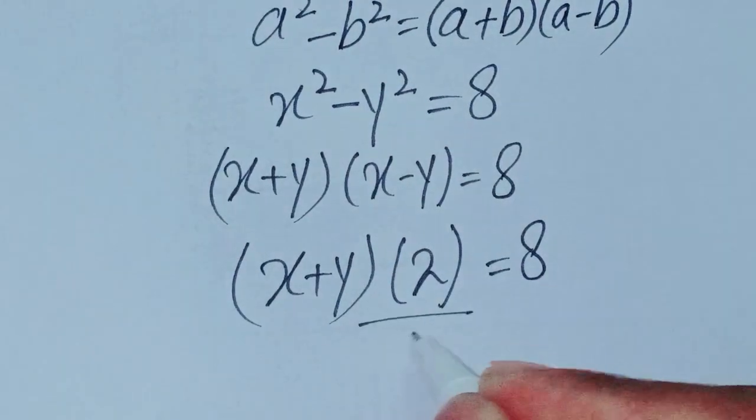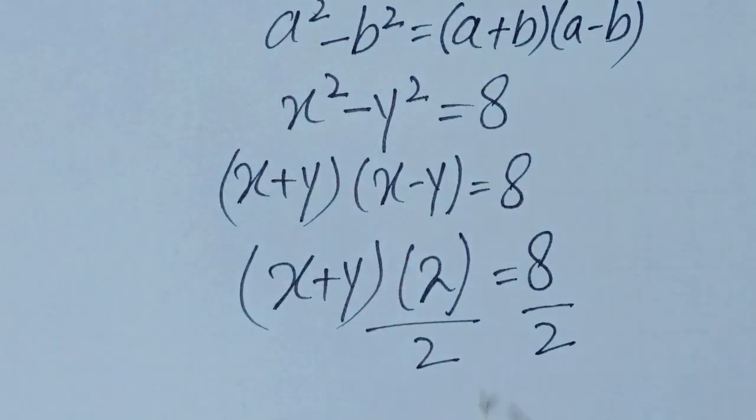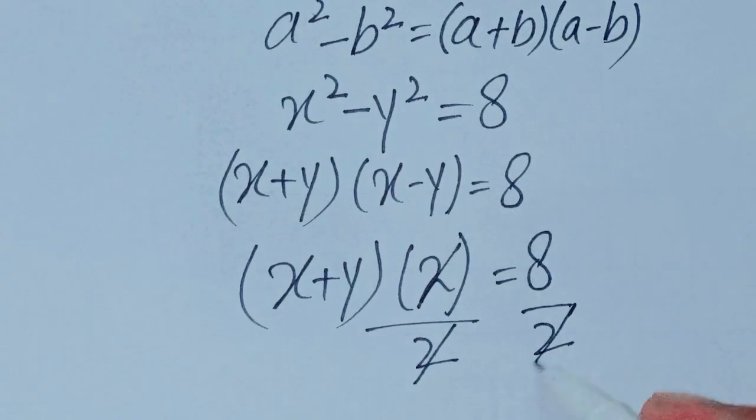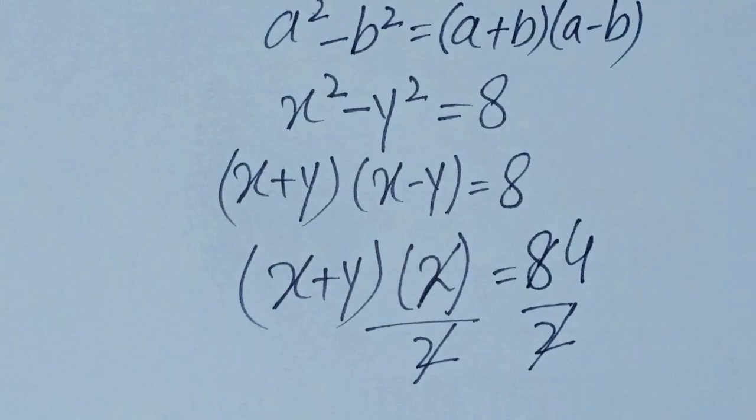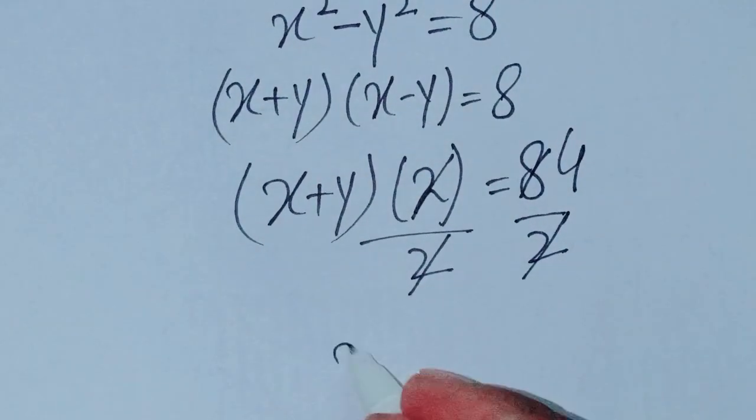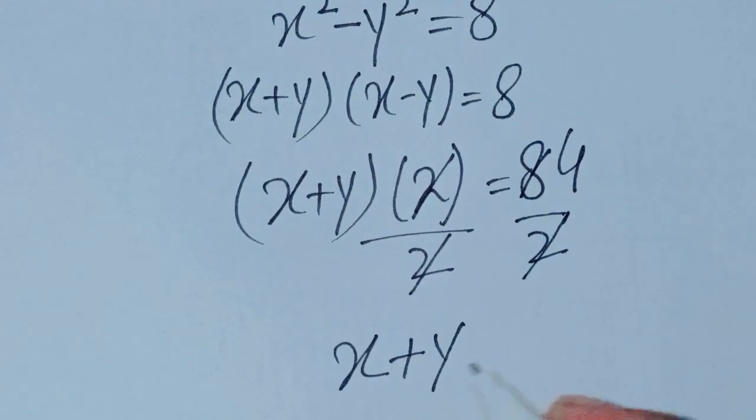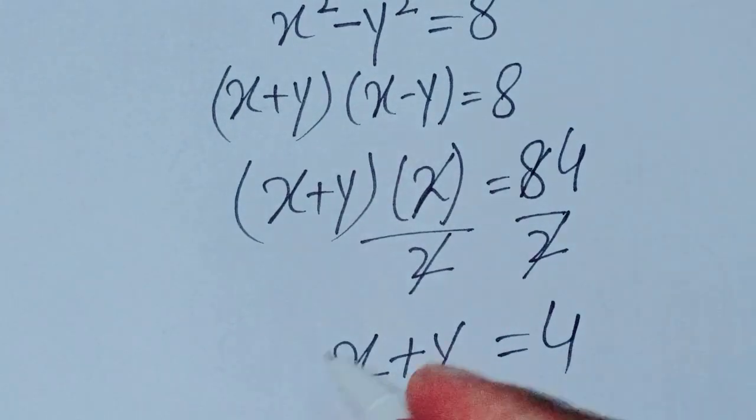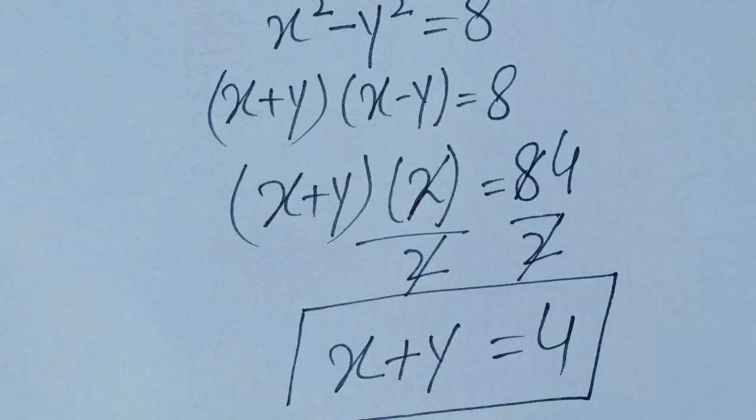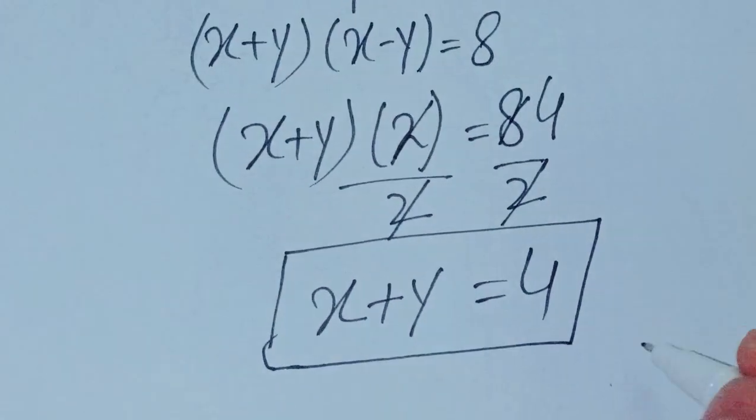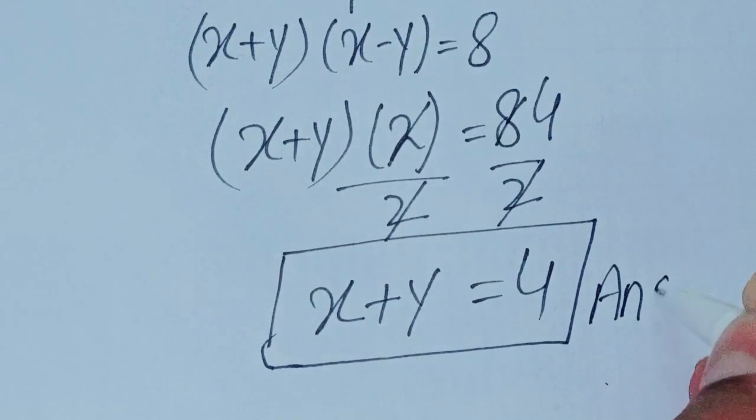So 2 divide on both sides, 2 cancels each other, 2 for the 8. So x plus y is equal to 4. So this is the required target and the answer of this question.